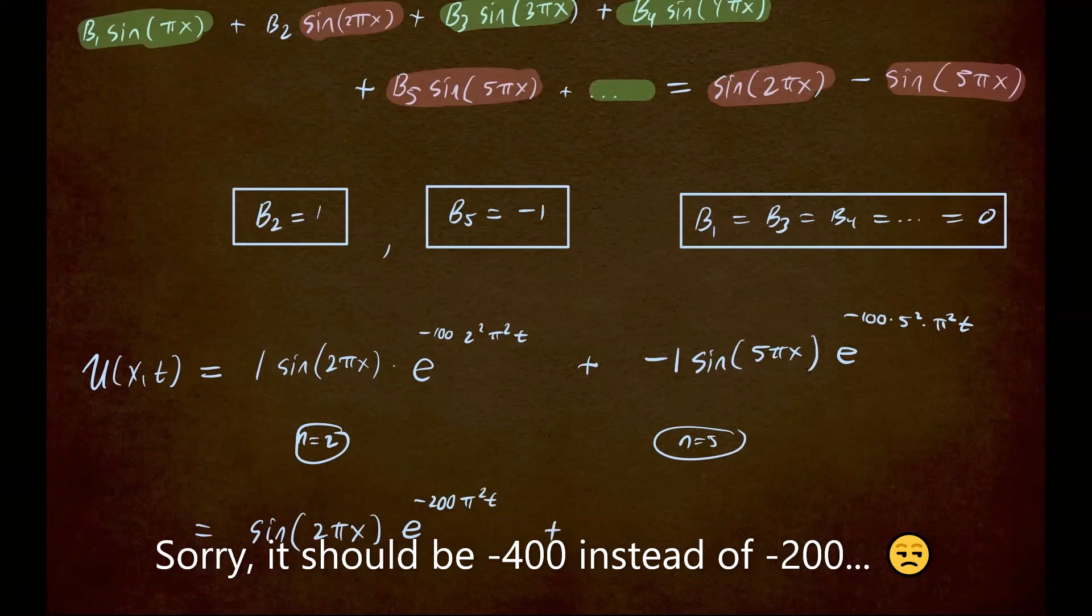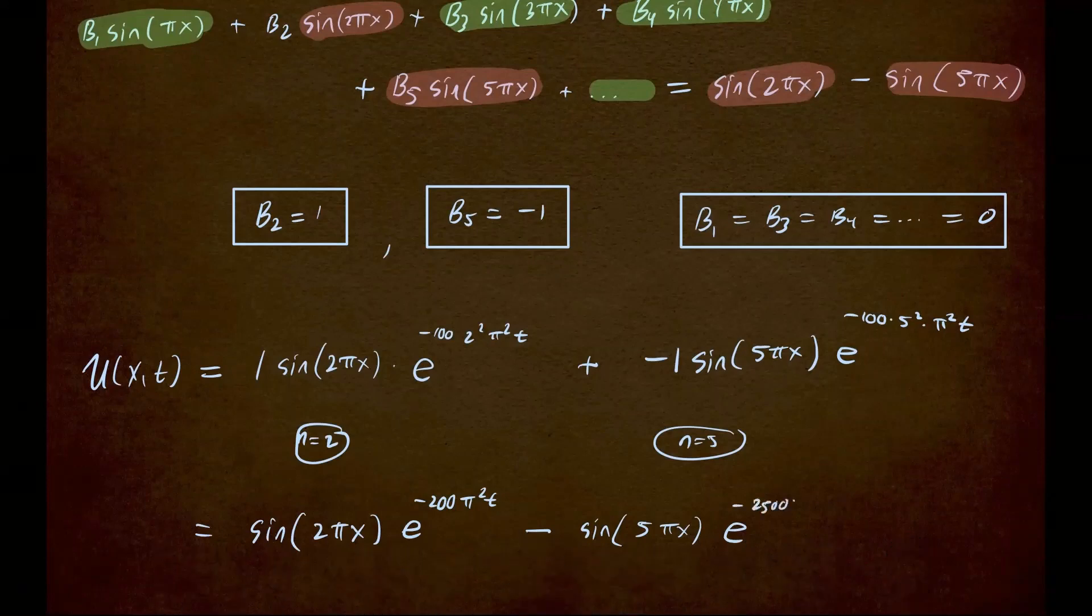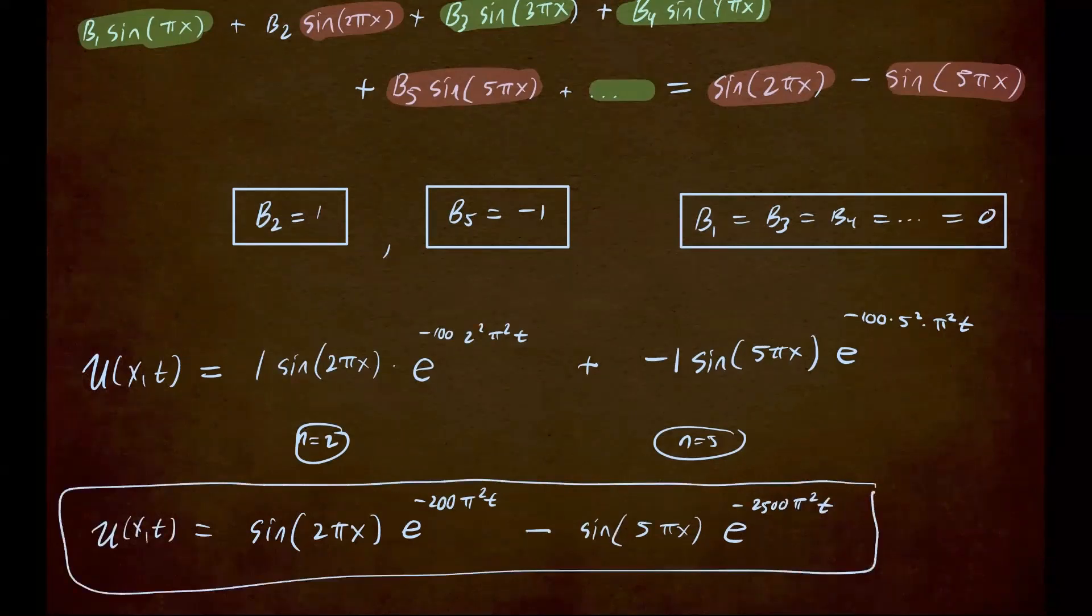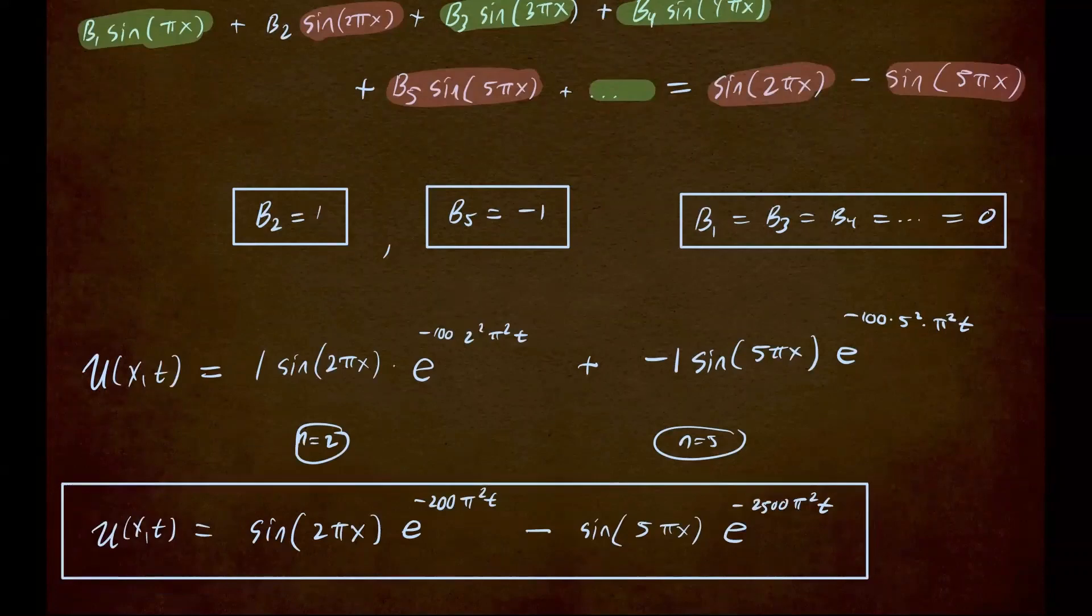So it would be 200 times pi square times t. And the last one, we have negative—so it would be negative sine of 5 pi x times e to the 100 times 5, that's 25. So that's 2,500 times pi square times t. So that will be your solution that will satisfy this given boundary condition and, of course, the initial condition.